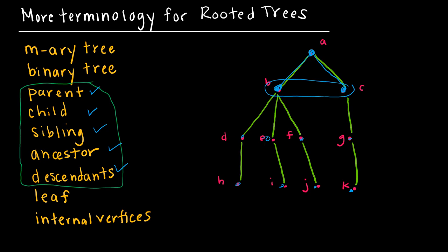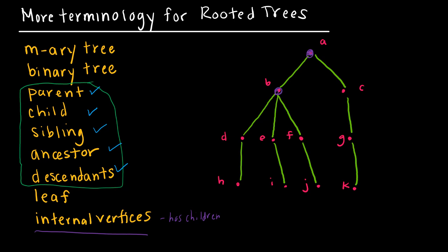Now let's talk about leaves and internal vertices. Each vertex is either a leaf or an internal vertex. An internal vertex has at least one child. So A, B, C, G, F, E, and D are all internal vertices.